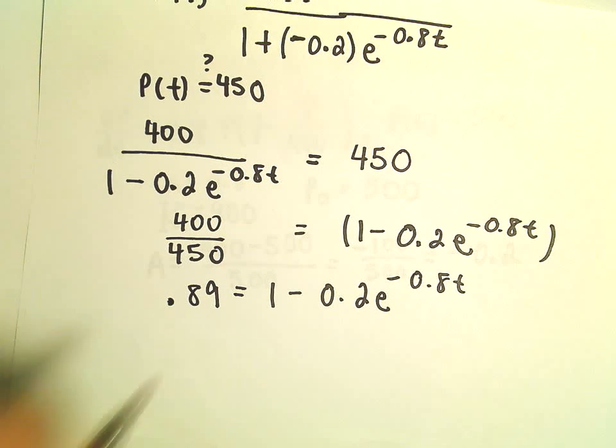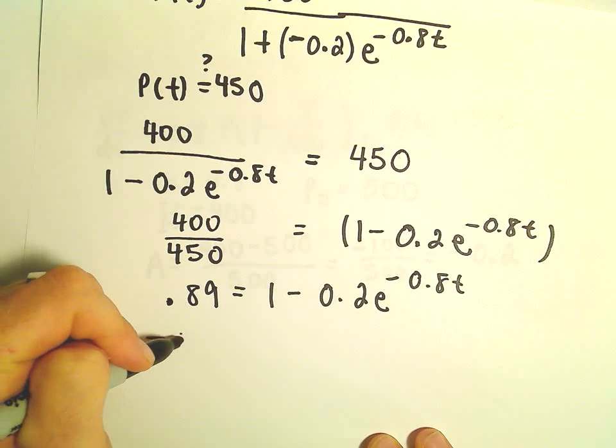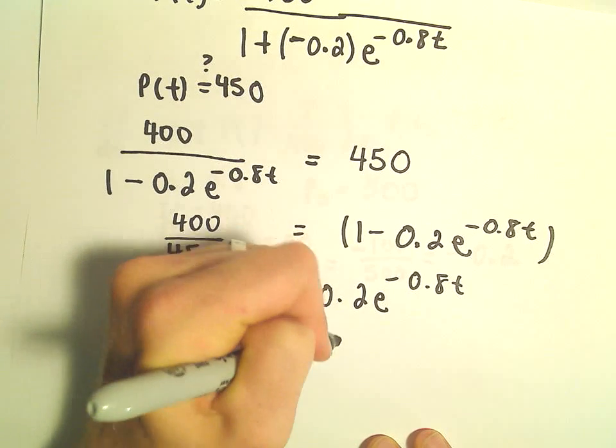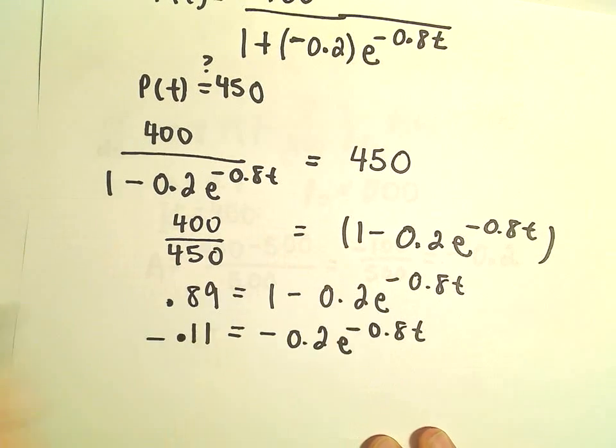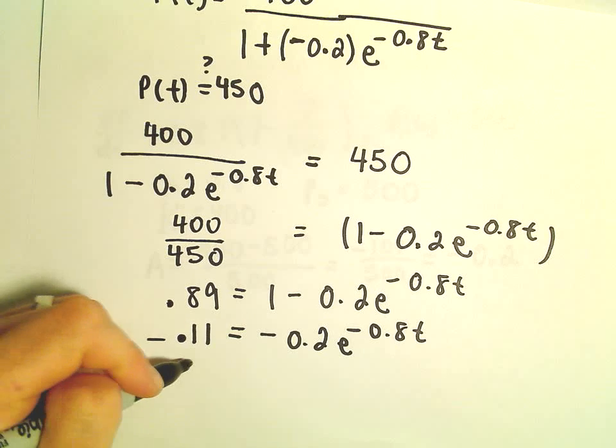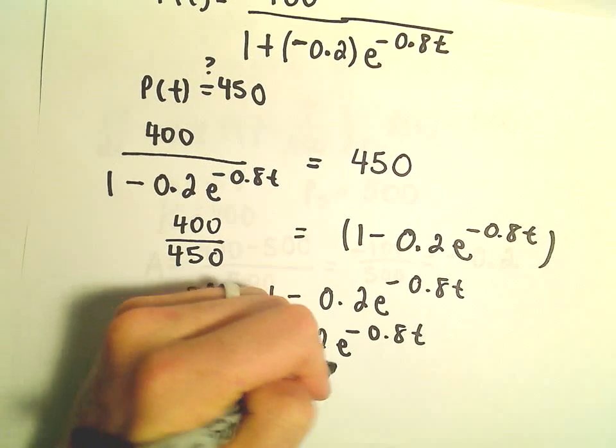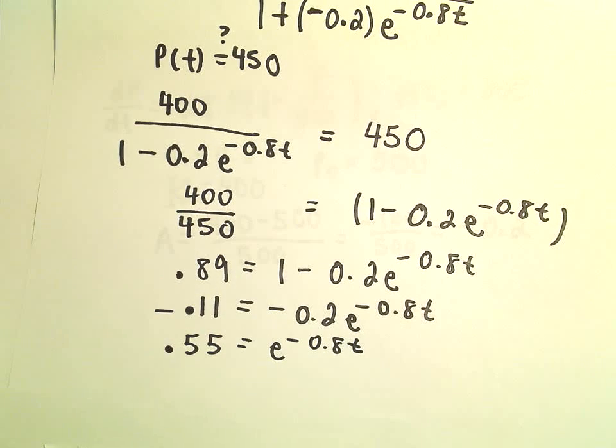All right, so if we subtract 1, we'll have negative 0.11. That's going to equal negative 0.2 times e to the negative 0.8 times t. So if we take our negative 0.11 and divide that by negative 0.2, that's just going to give us 0.55, and then we still have our e to the negative 0.8 times t.